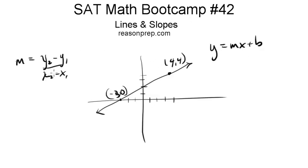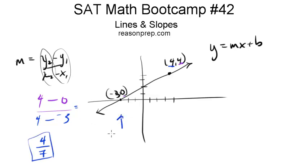Let's figure out the slope. The 2's and 1's don't really matter - you just need to be consistent with your subtraction. So 4 minus 0 over 4 minus negative 3. This turns into 4 over 7, which is the slope.